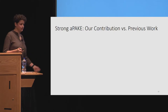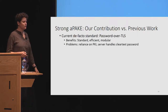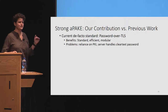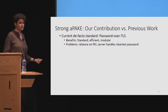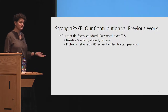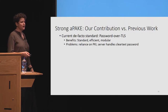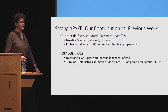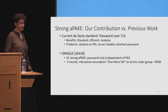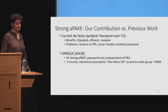But what's our contribution here, since this is already existing? To recap: password over TLS is the current de facto standard — it's efficient and modular, but has the two problems I mentioned. OPIC, the protocol proposed at Eurocrypt, proposes a universally composable strong APAKE that is independent of PKI. It has three rounds and is based on an interactive assumption.